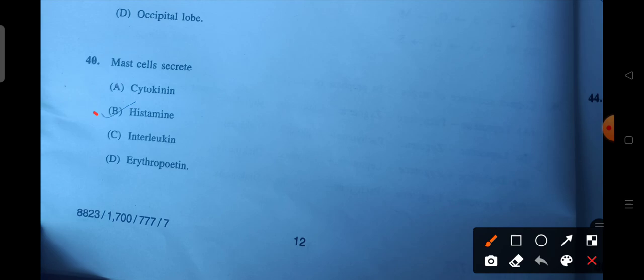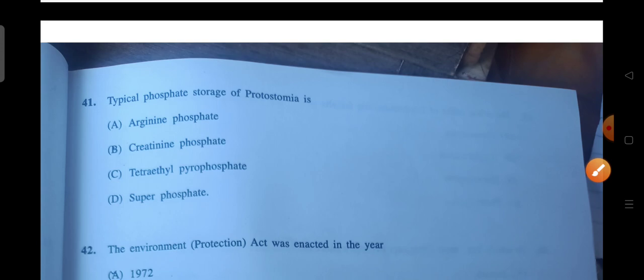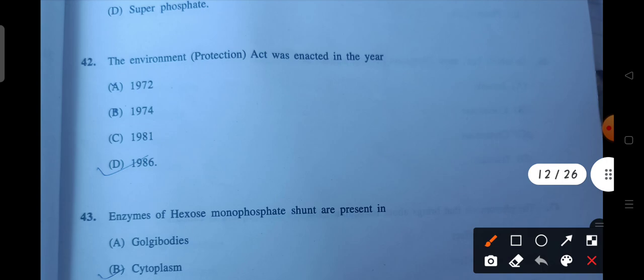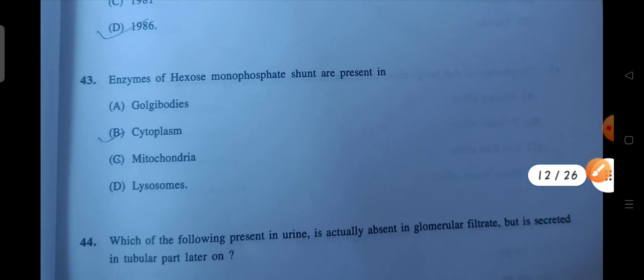Next is mast cells secrete. So what do they secrete? They secrete histamine. B will be the correct answer. Next is typical phosphate storage of Protostomia. So what is the correct answer? That is A. Next is the Environment Protection Act was enacted in the year. So which year was it enacted? 1986 is the correct answer.